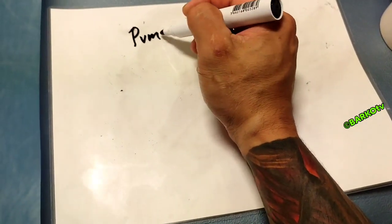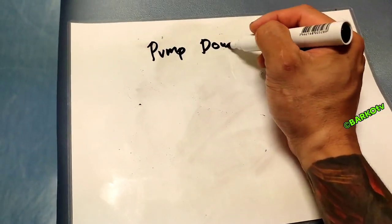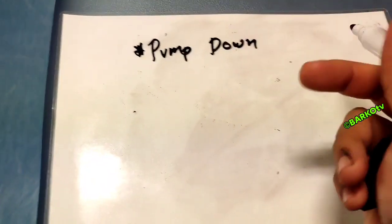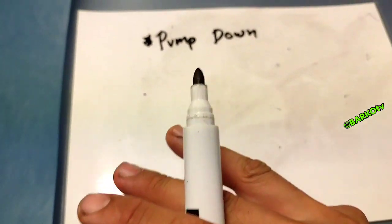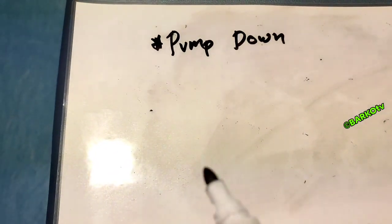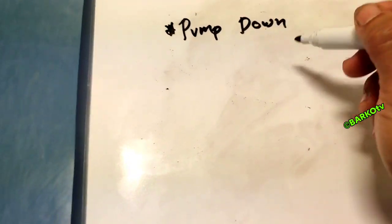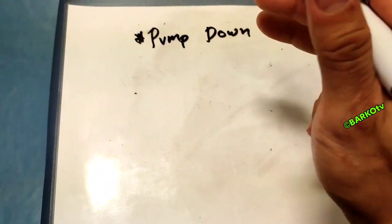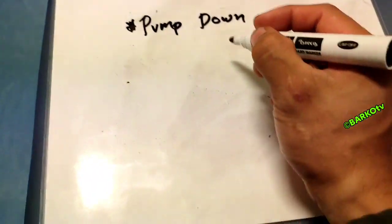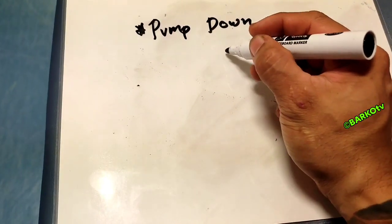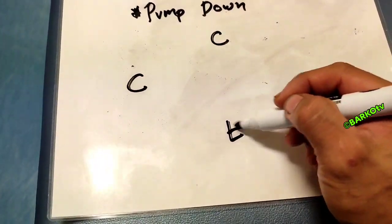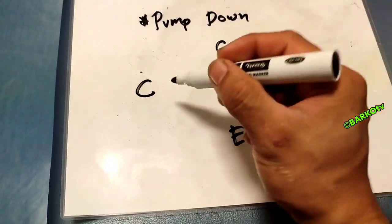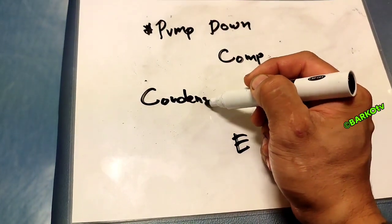Today's topic is all about pump down — what is the use of pumping down your system and the reason why. Pump down means if you have a maintenance, you need to put almost the total amount of your refrigerant going to your condenser or liquid receiver. If you have maintenance on your compressor, you simply move almost all your refrigerant to the receiver.